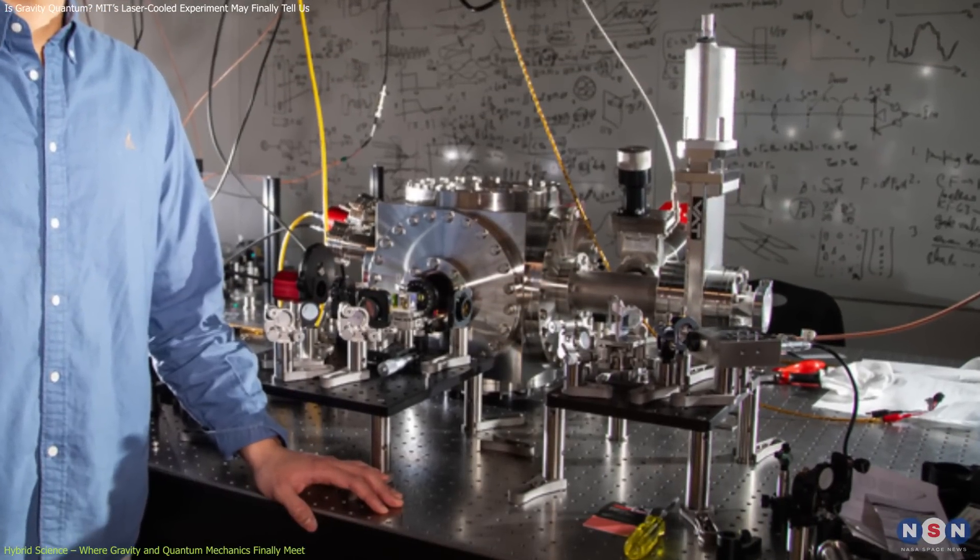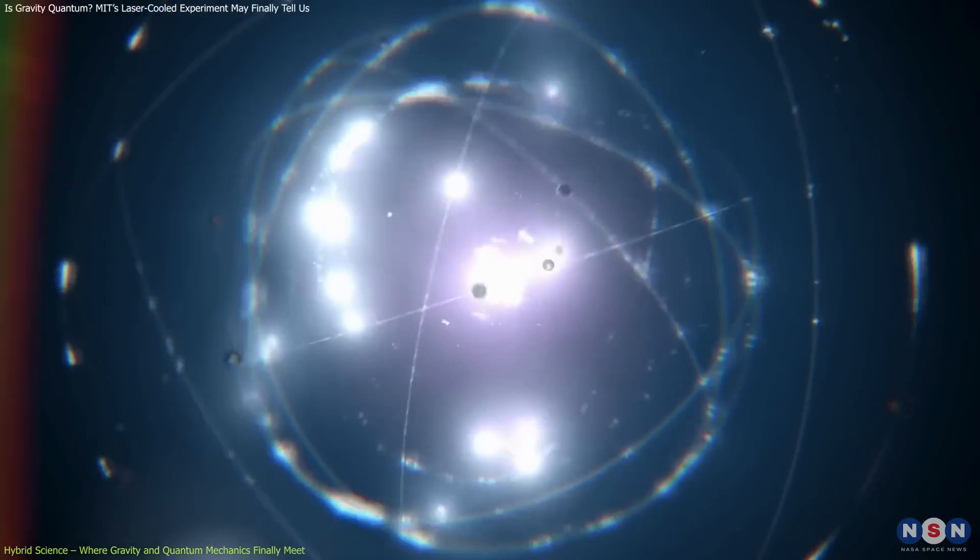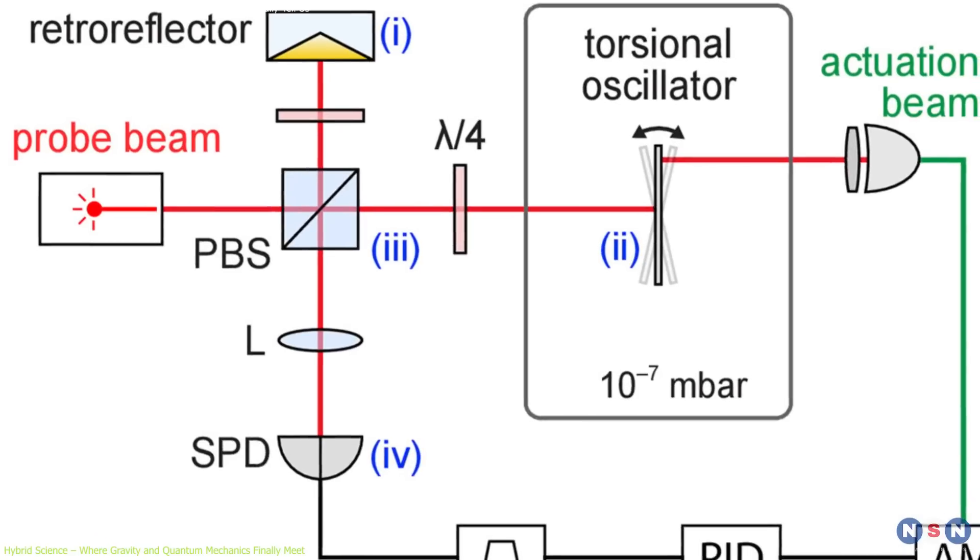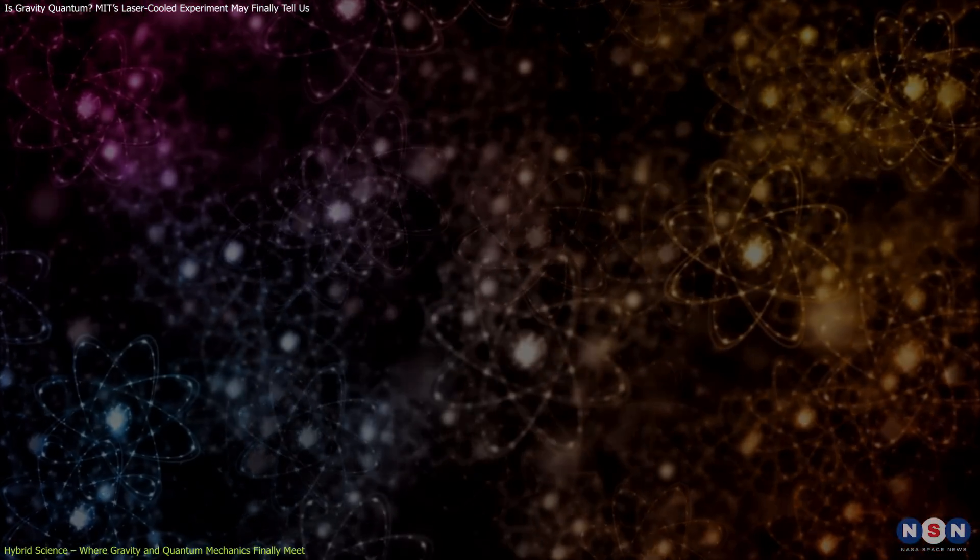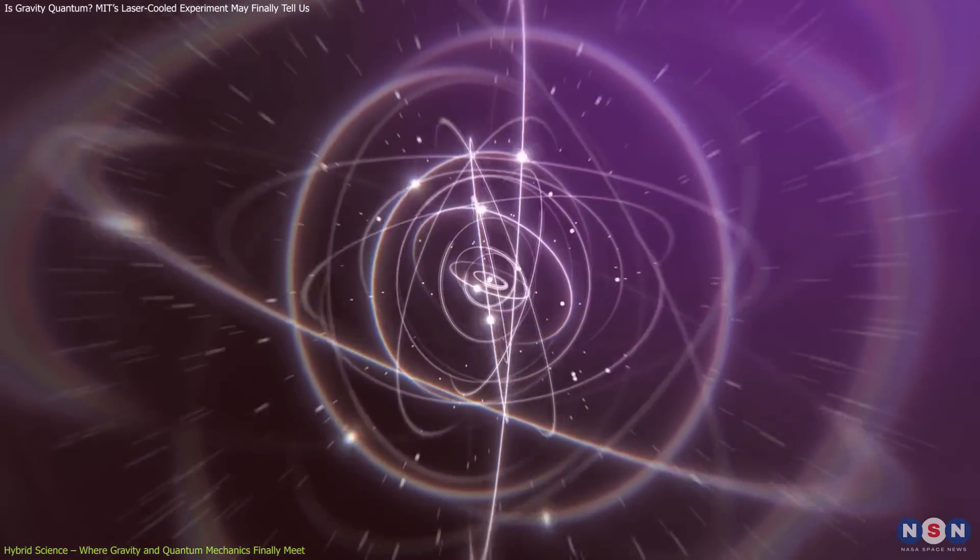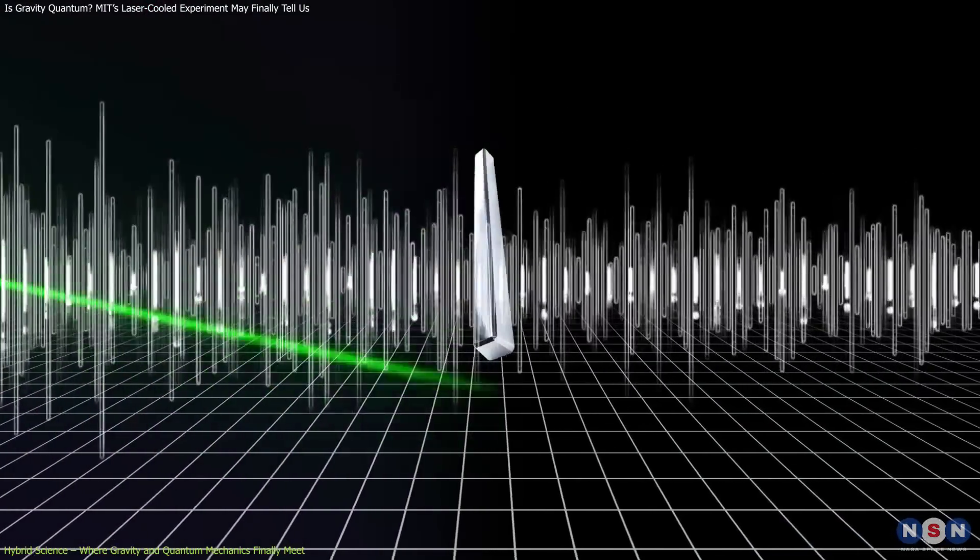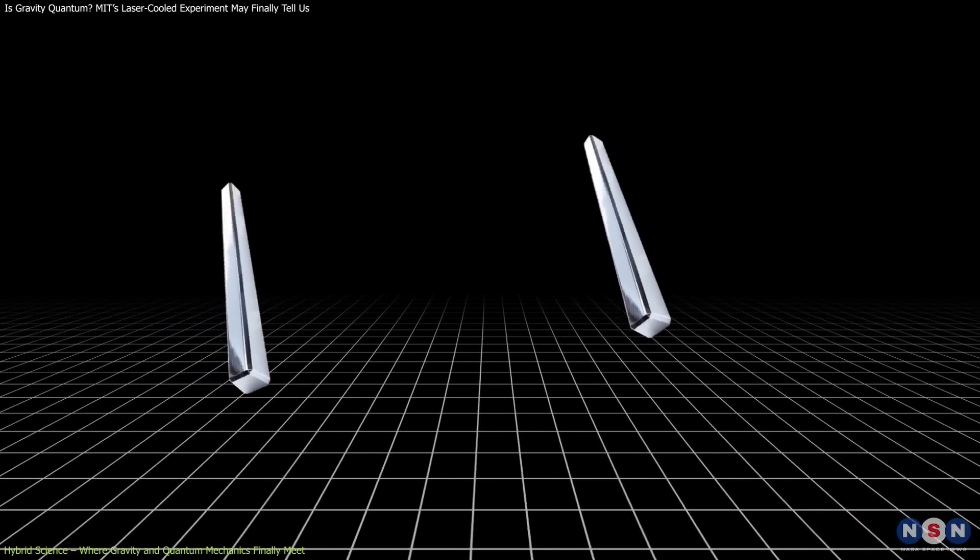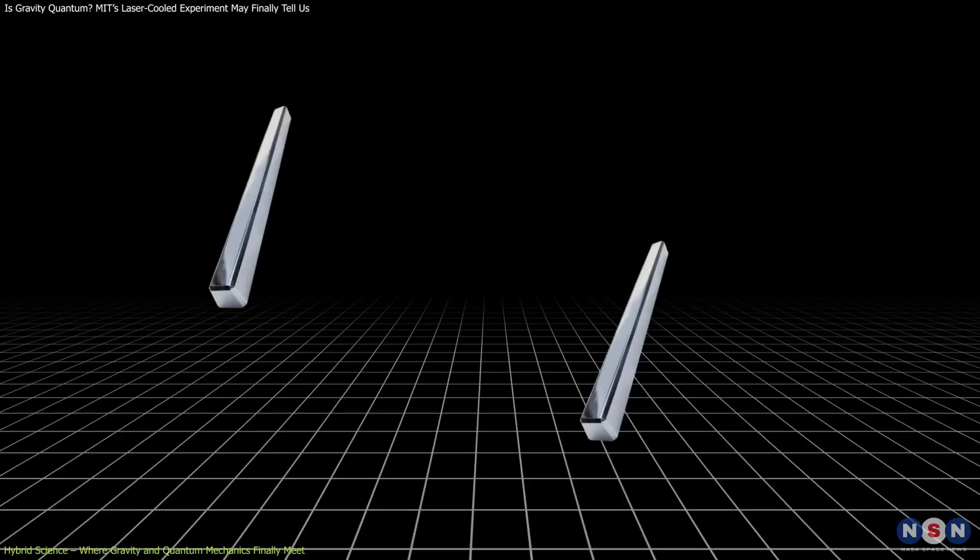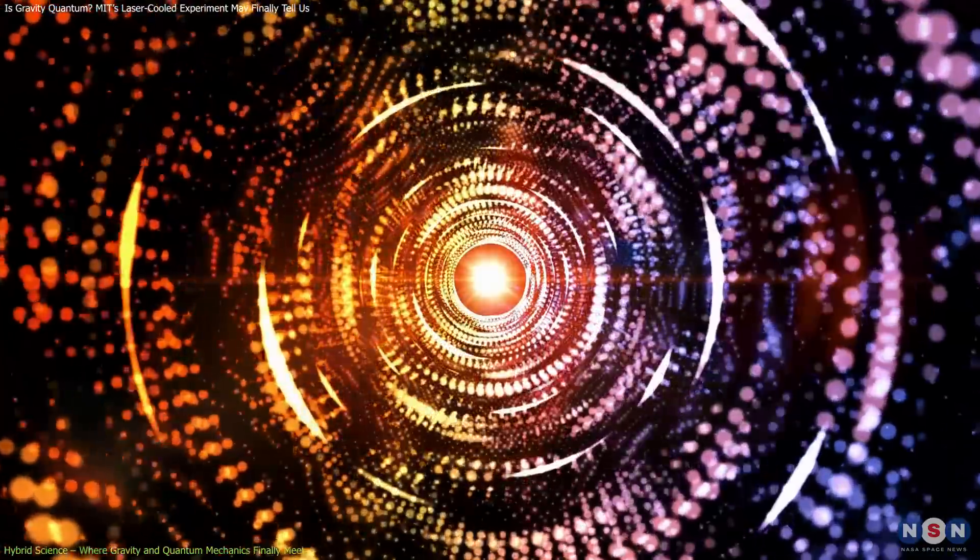That's where MIT's hybrid system changes the game. By creating a platform where a massive object behaves in a quantum way, it becomes possible to directly test how gravity acts between quantum systems. This is not theory anymore. It's lab science. The key here is scale. At the atomic level, gravitational interactions are incredibly weak, essentially drowned out by other forces. But torsional oscillators, being larger, feel gravity more strongly. At the same time, laser cooling and noise isolation ensure that other forces are minimized. That delicate balance is what makes this experiment so powerful. It could eventually lead to setups where two quantum coherent oscillators interact only via gravity. If entanglement or quantum correlations emerge, it would suggest that gravity itself must be a quantum field, a result that would reshape modern physics.